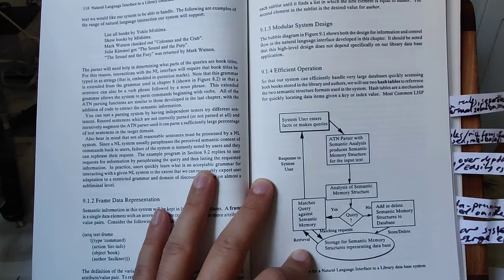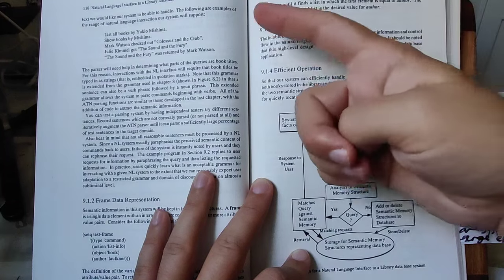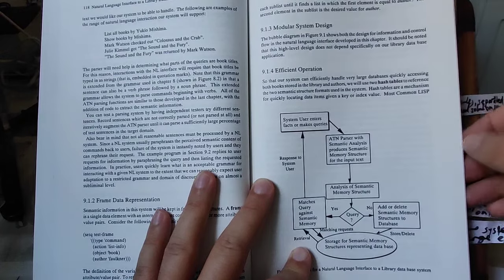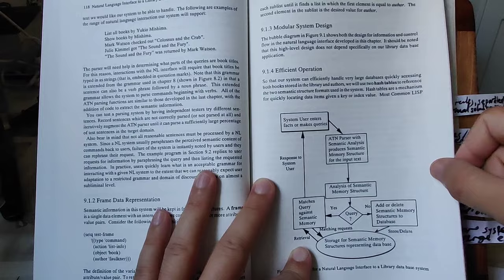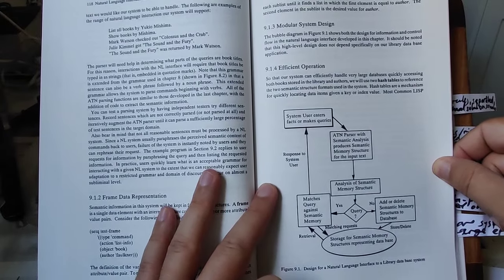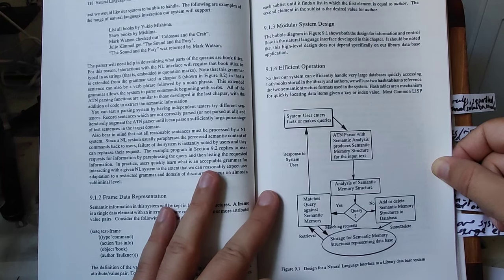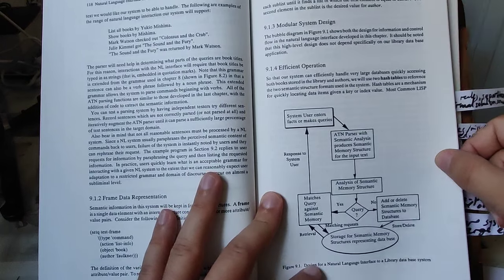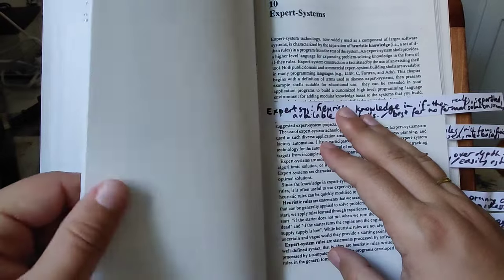Here is his example of a library interface: list all books by Yukio Mishima, show books by Mishima and so on. These should lead to similar parses. The big advantage of semantic parsers towards purely syntactic parsers is that semantic parsers are trying to get similar identifications of meaning frames even if they are syntactically expressed in a somewhat different fashion.